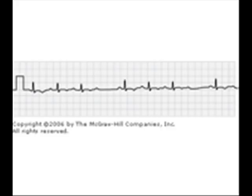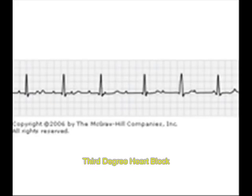Now this is second degree Mobitz type 1. In this, the PR interval increases progressively until ultimately a P wave is dropped. This is Mobitz type 1.